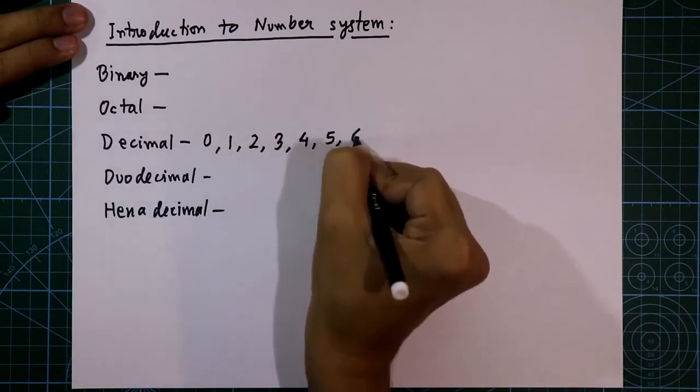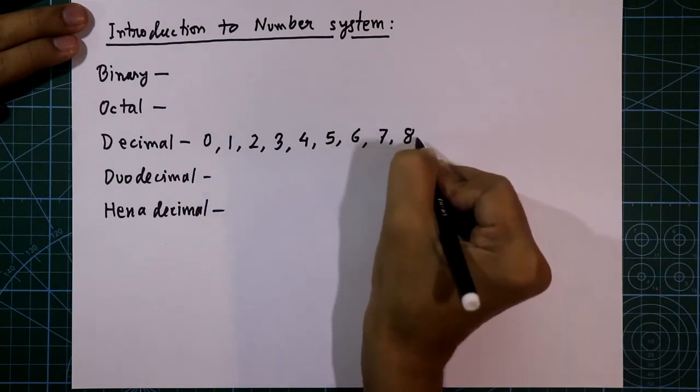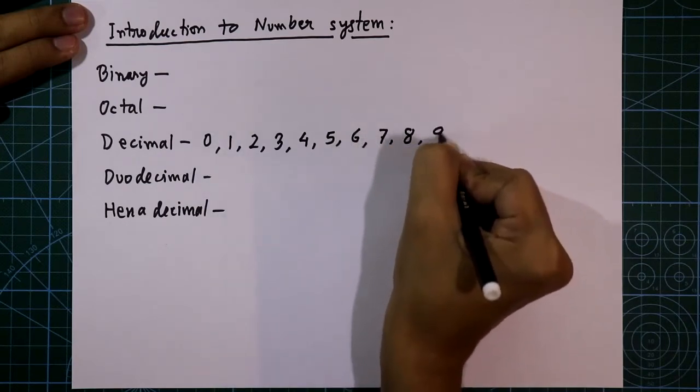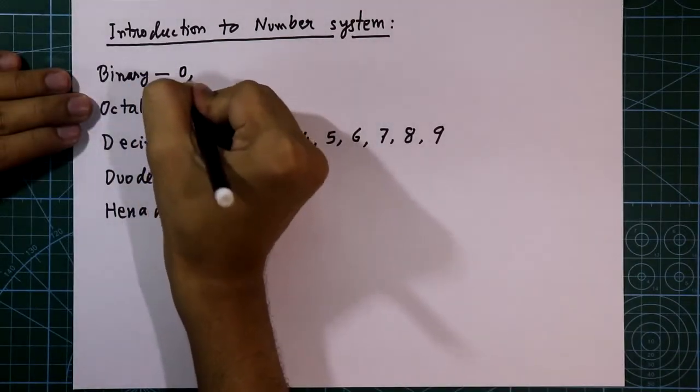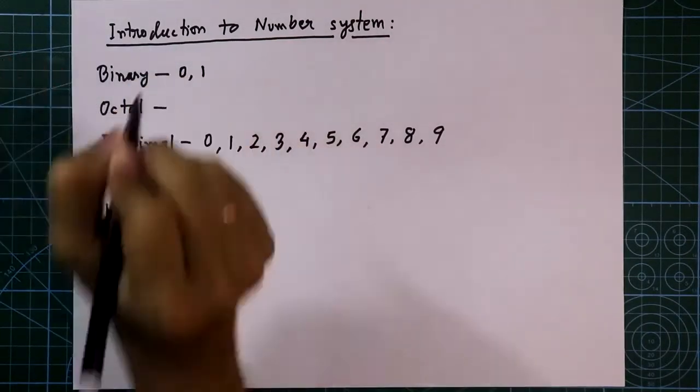In our decimal number system, we have 10 unique symbols from 0 to 9. In binary number system, 0 and 1. The base is 2.